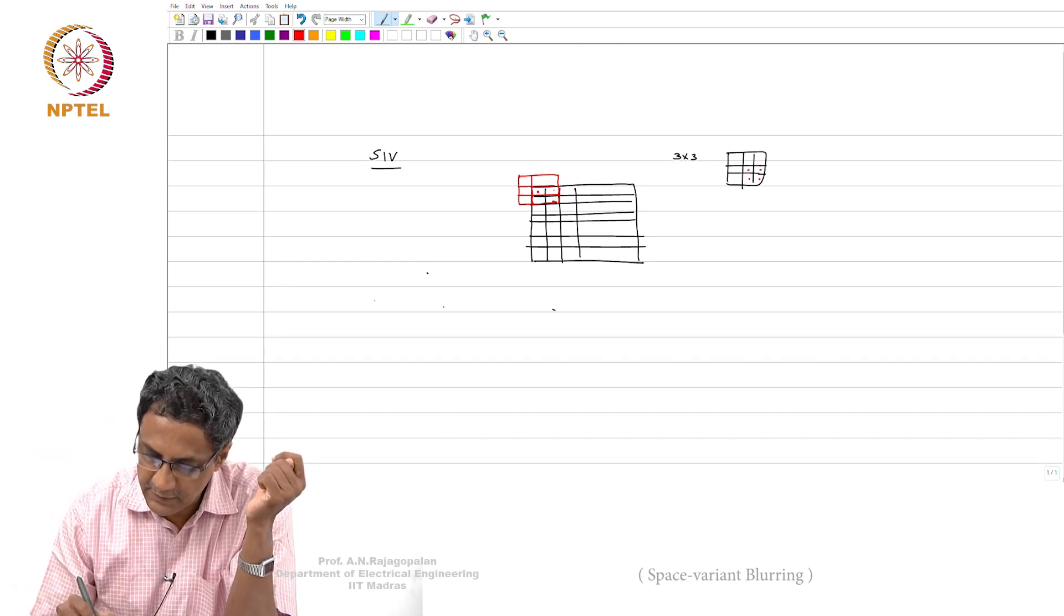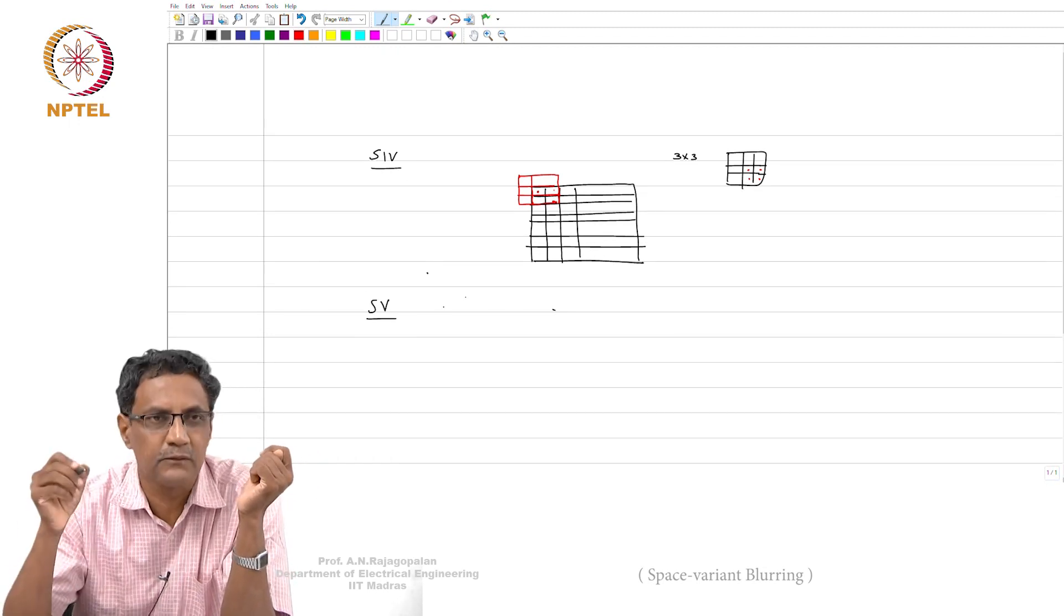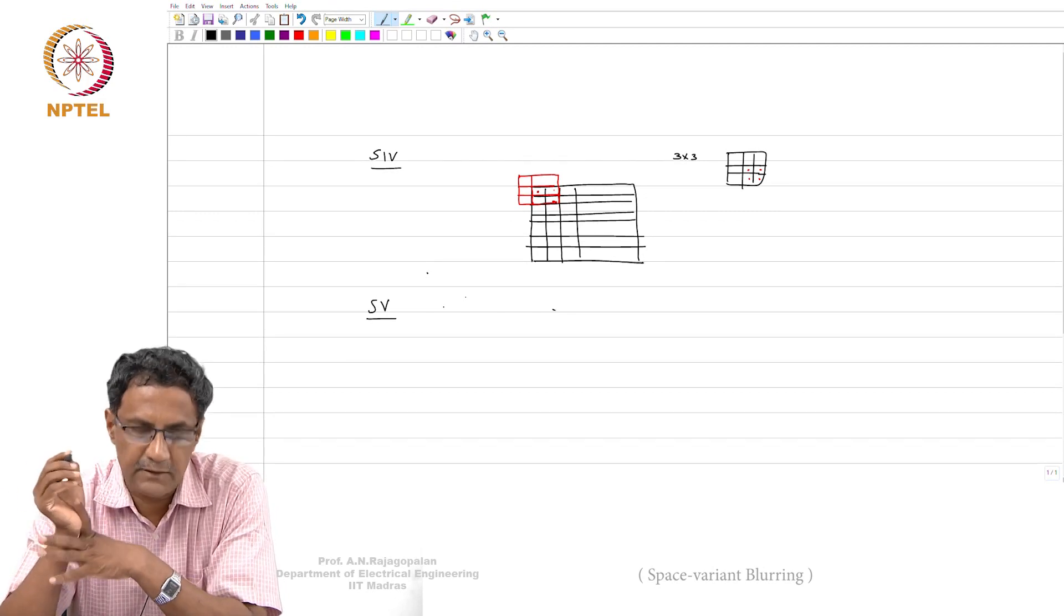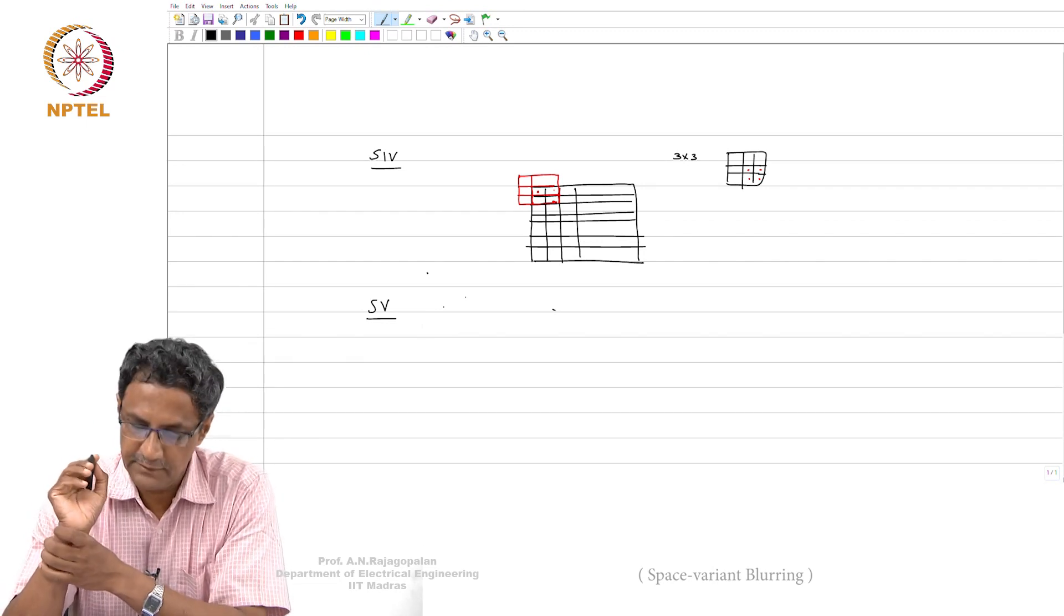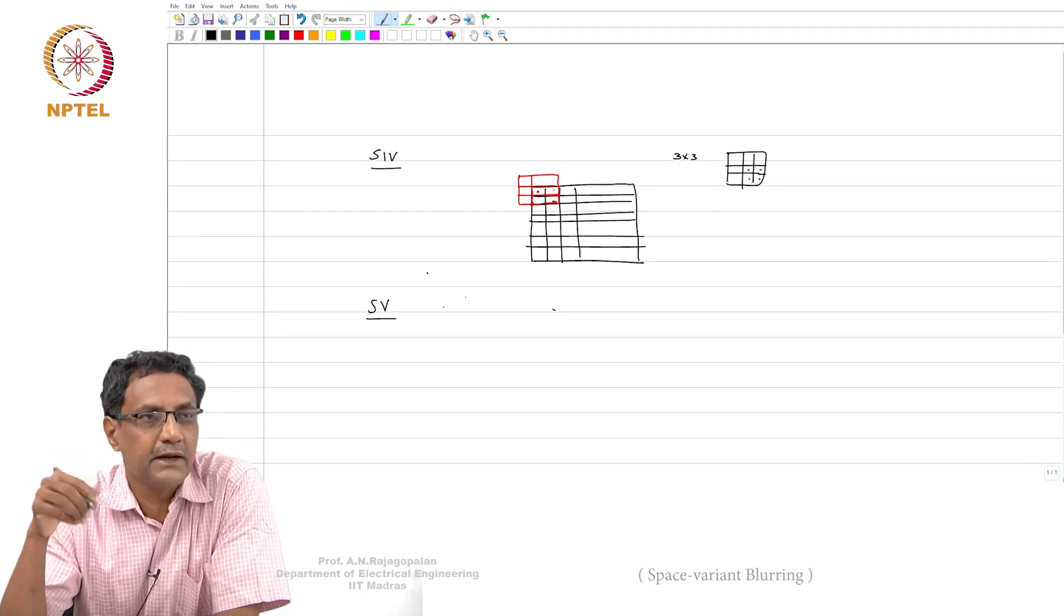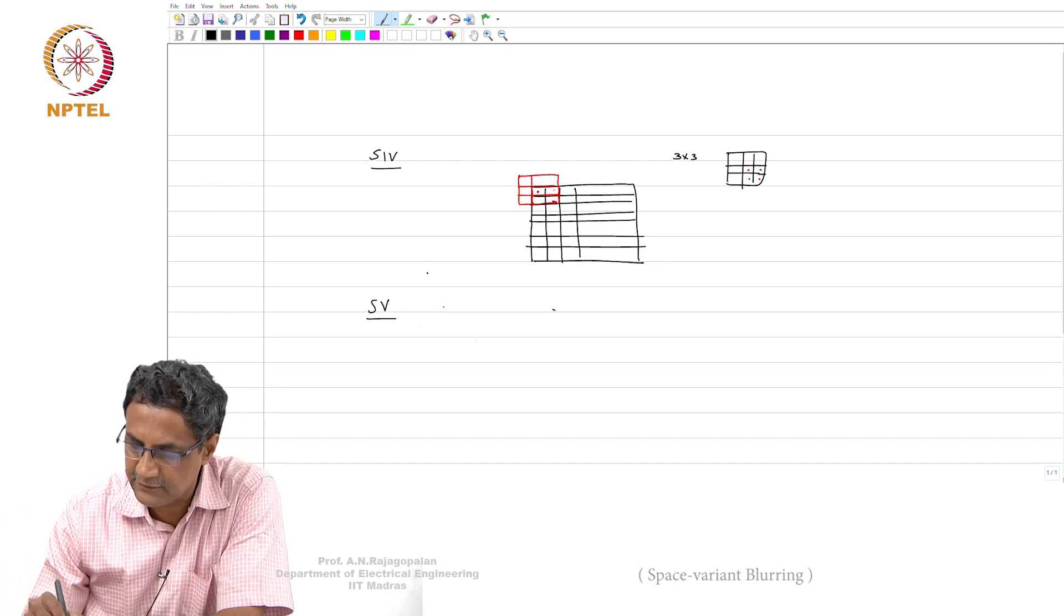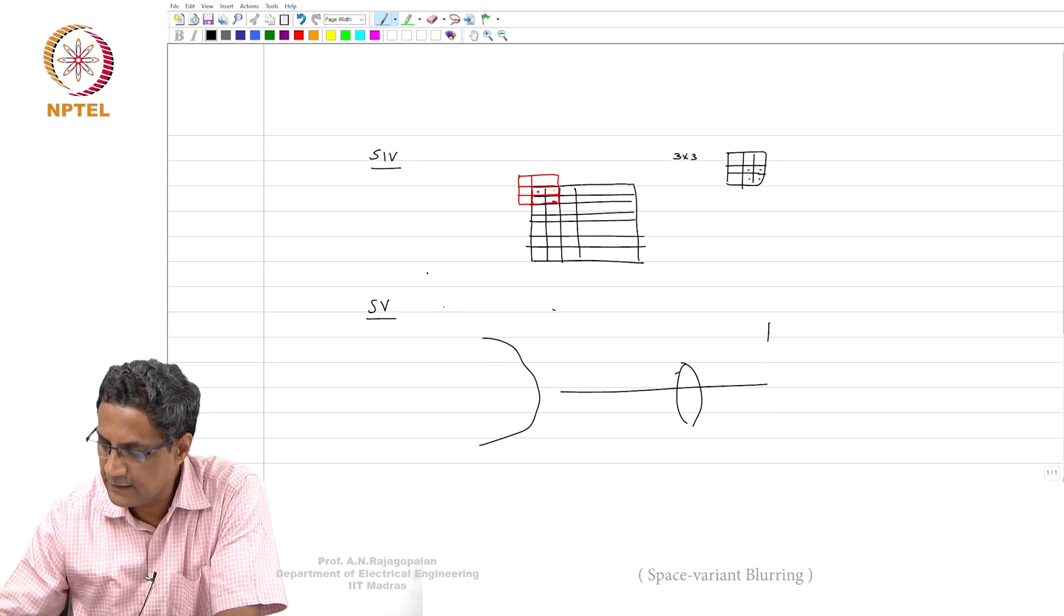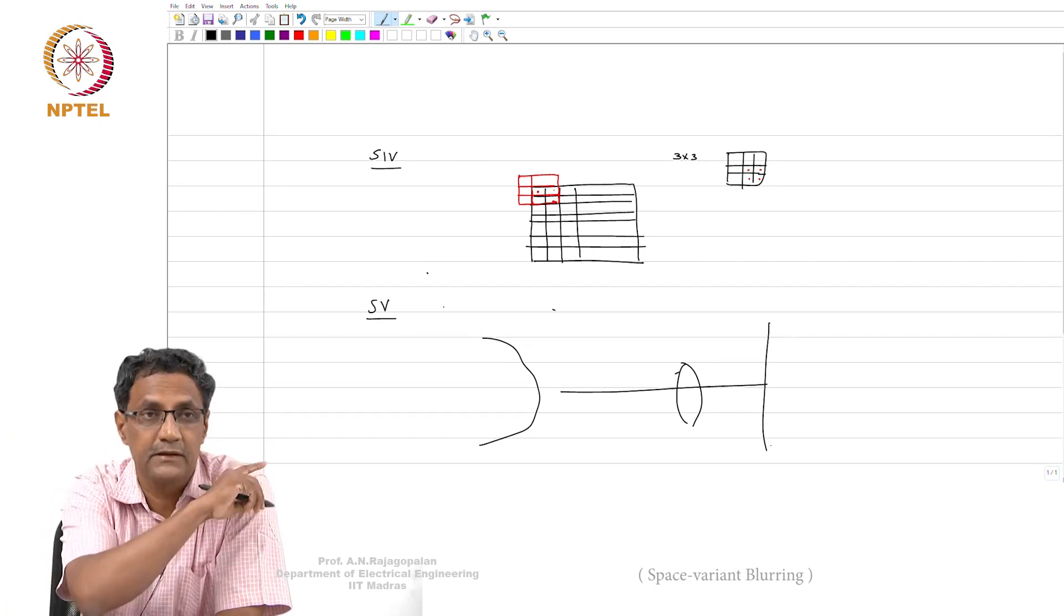The other one is the space variant blurring. This is more tricky. And some people call it space variant convolution. But I don't know. See, convolution itself means like it should be invariant, time invariant or space invariant. But this is the terminology that has come to be accepted. Some people say it's a space variant convolution. But we will simply say space variant blurring.